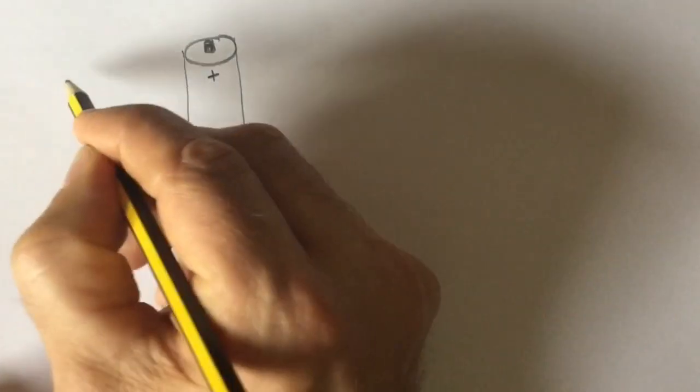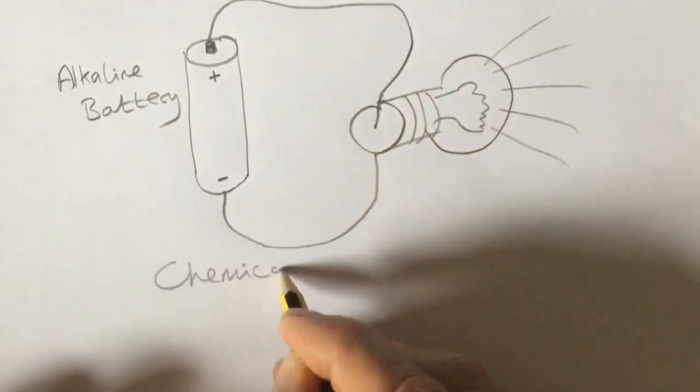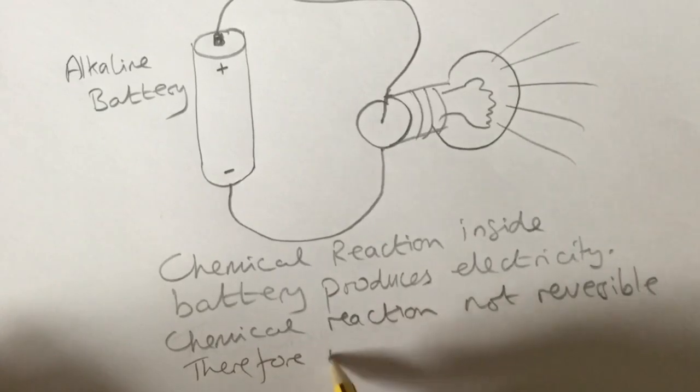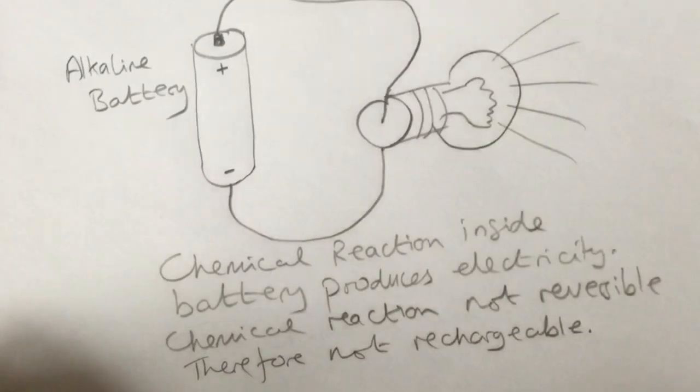So alkaline batteries are non-rechargeable, which basically means they're disposable, but they can be recycled. The reason they can't be recharged is because there's an irreversible chemical reaction that takes place inside them to produce electricity.